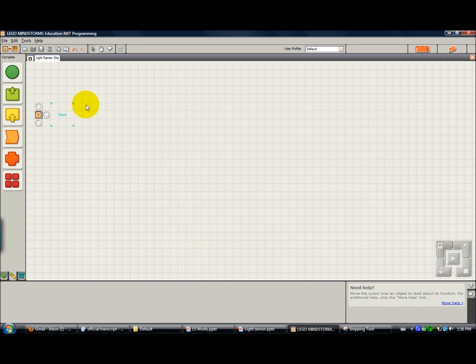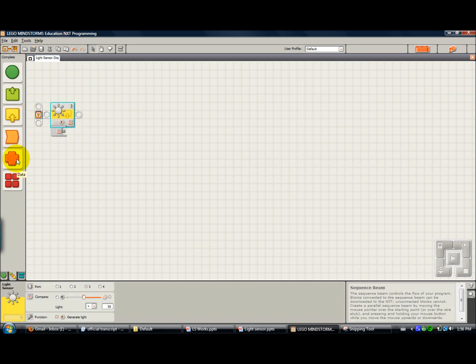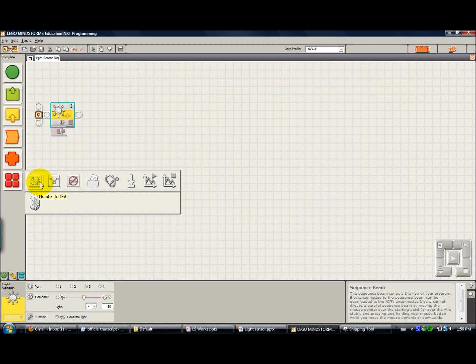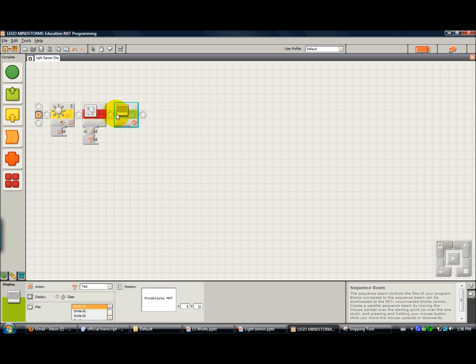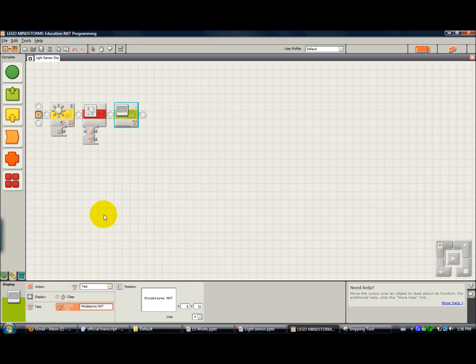First we want to start with the light sensor block. We drag and drop that. We need an advanced block that changes numbers to text because the display block won't display numbers. To convert numbers to text to display them, on this one we're going to change this to text. We're going to make sure that when we wire up our light sensor we plug it into port 3.